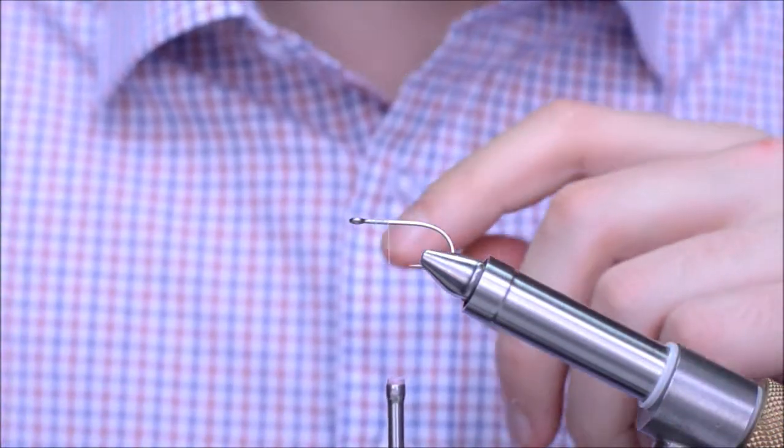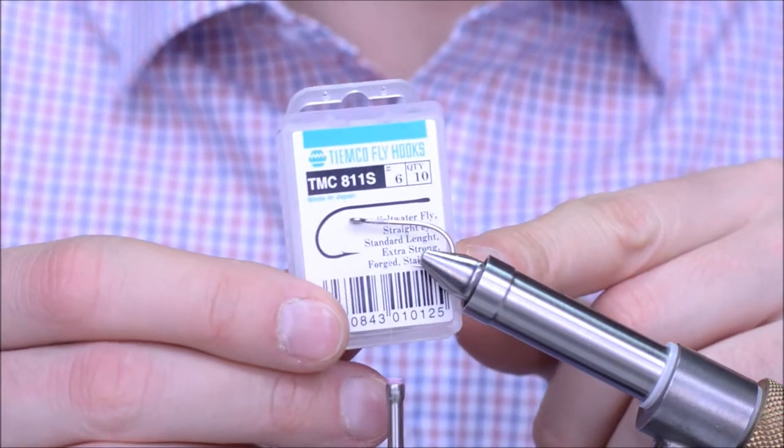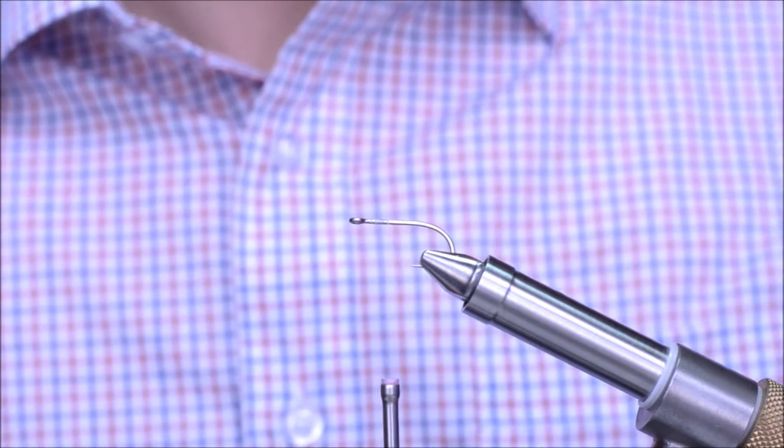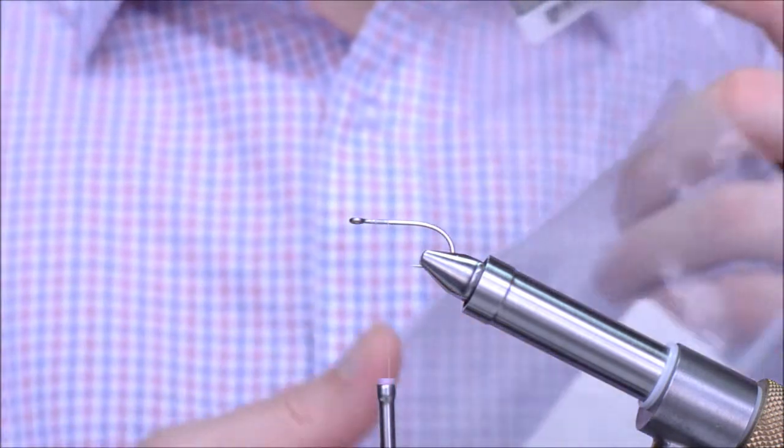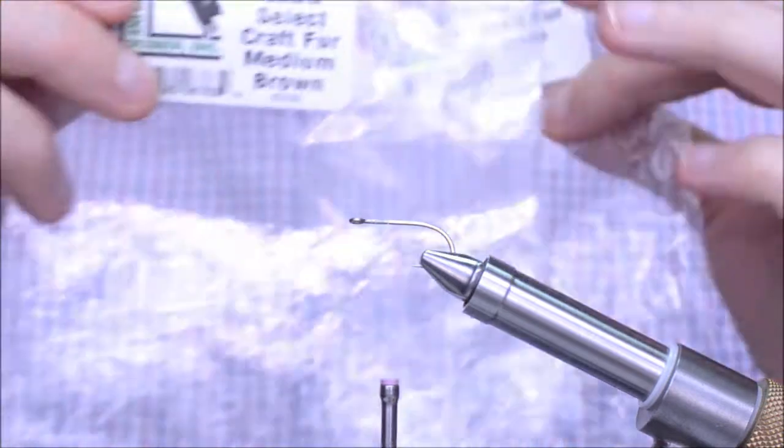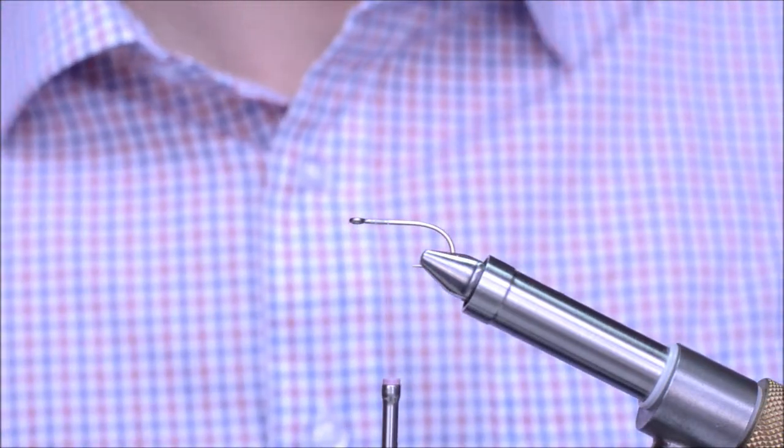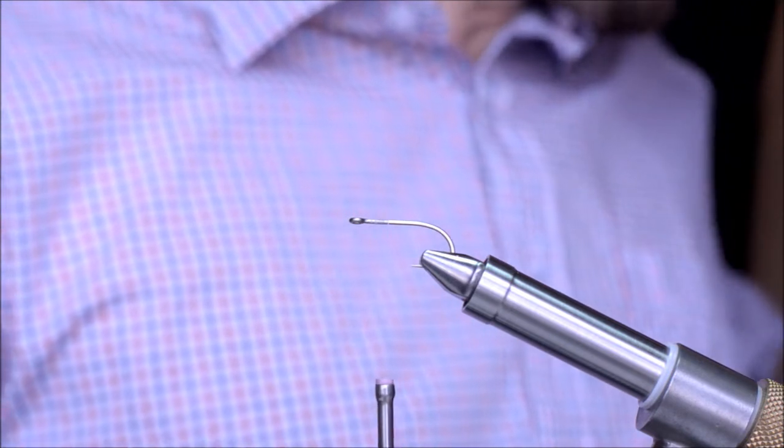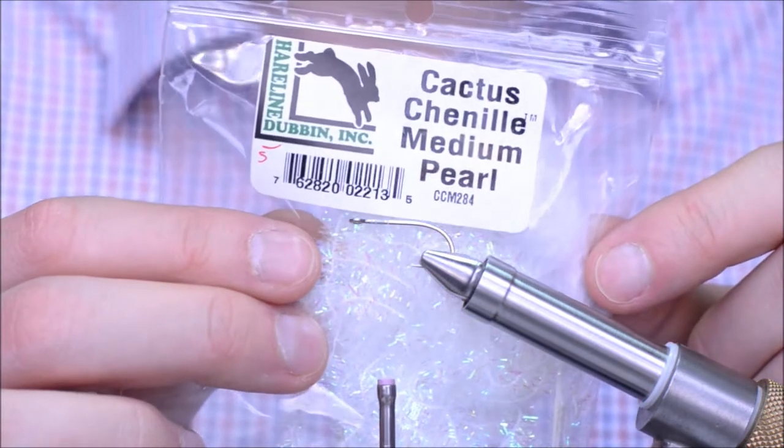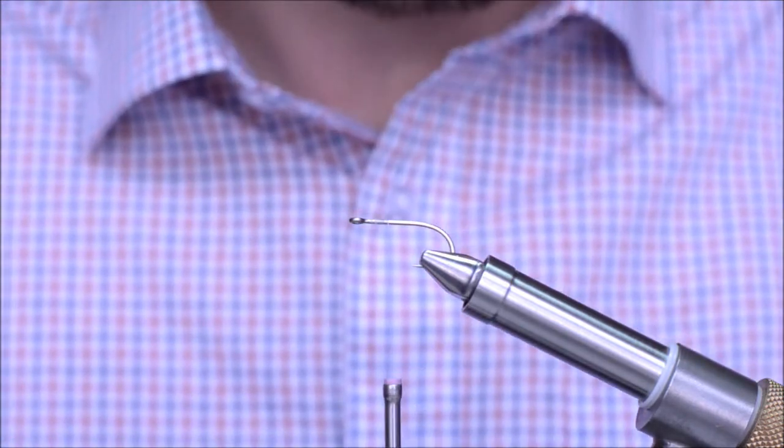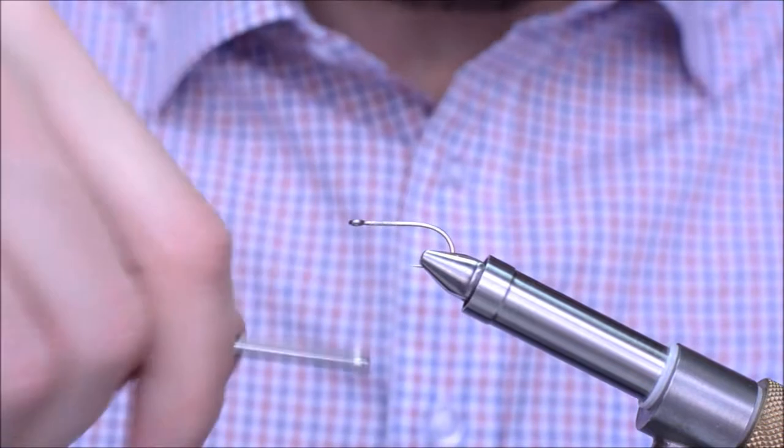The hook I'm using is a TMC A11S size 6. I'm going to use white and medium brown craft fur, cactus chenille, and white unit red thread.